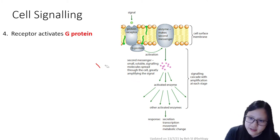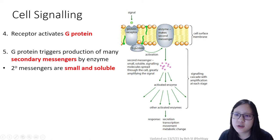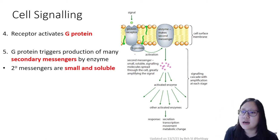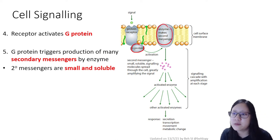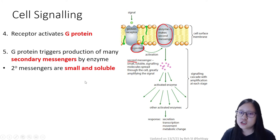When the receptor changes shape, it activates the G protein — a specific protein located very close to the receptor. The G protein then triggers the production of many secondary messengers via an enzyme. You can see how the G protein activates the enzyme in the cell membrane, making the second messenger. Some textbooks call them 'second messengers' — it's the same thing.